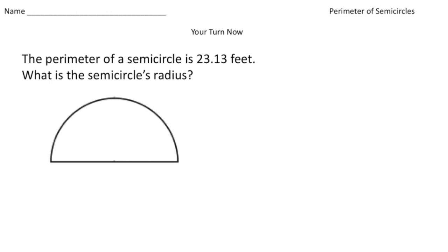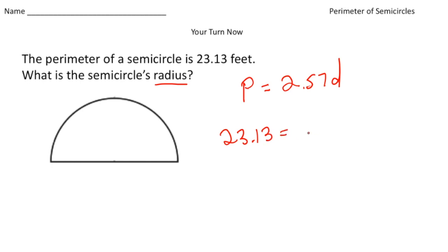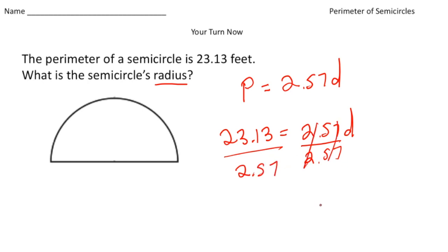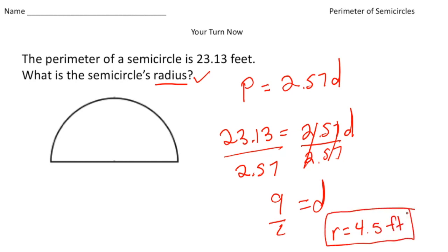Welcome back. Let's see how you did on the practice problem. The question says: the perimeter of a semicircle is 23.13 feet. What is the semicircle's radius? Let's underline the word radius. Using the same formula — perimeter equals 2.57 times the diameter — we replace P with 23.13: 23.13 equals 2.57d. Dividing both sides by 2.57, we get 23.13 divided by 2.57 equals 9, so the diameter is 9. But we're looking for the radius, so we divide the diameter in half: the radius is 4.5 feet.